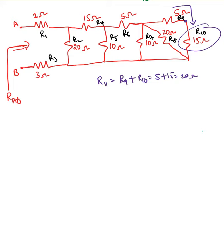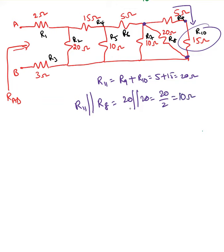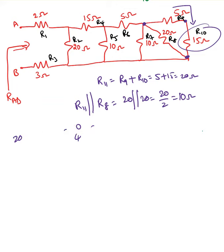Now R11 is parallel with R8. Since R11 and R8 share the same start and end nodes, that's 20 parallel with 20 = 10 ohms. As a general rule: equal resistors in parallel give that value divided by the number of resistors. For example, four 20-ohm resistors in parallel = 20 / 4 = 5 ohms. I'll redraw the circuit for simplification.